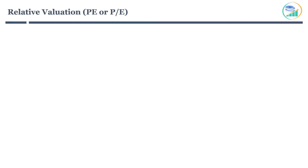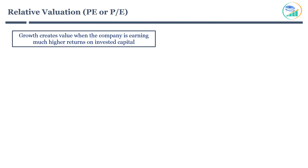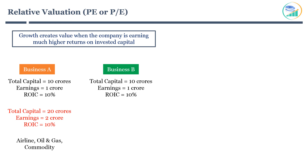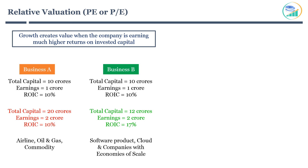In the previous slide, I talked about how companies with a higher growth rate will demand a higher P/E. However, growth creates value only when the company is earning much higher returns on invested capital. To understand this concept, consider business A and business B, each generating 1 crore of earnings from 10 crores of capital invested — a 10% return on invested capital. If business A wants to double its earnings, it has to invest an additional 10 crores, keeping return on invested capital at 10%. Businesses like airline, oil and gas, and commodity fall under this category since their earning power mainly comes from tangible assets. On the other side, business B can double its earnings by adding only 2 crores, providing 17% return on invested capital. Capital-light businesses like software products, cloud services, and companies with economies of scale fall under this category.